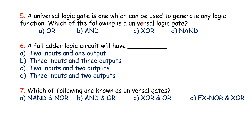The fifth question: the universal logic gate is one which can be used to generate any logic function. Which of the following is a universal logic gate? A universal gate can generate any logic function including the three basic gates: AND, OR, and NOT. Both NOR and NAND can generate any logic function, so they are universal logic gates. Option D, NAND gate, is the correct answer.